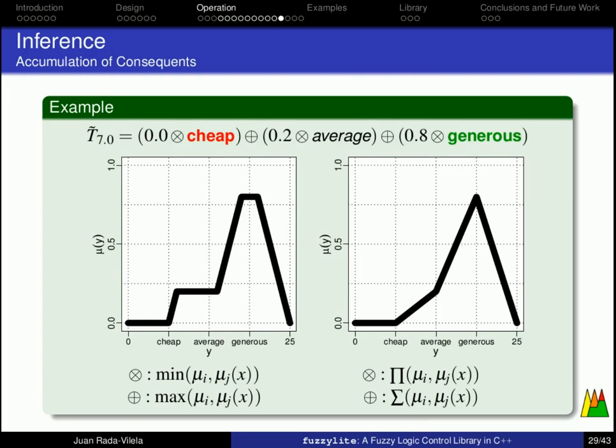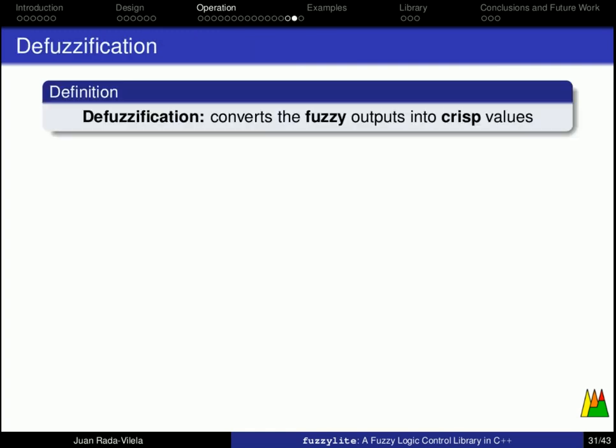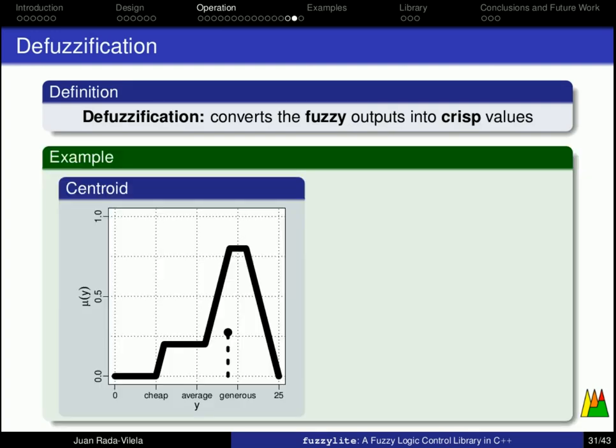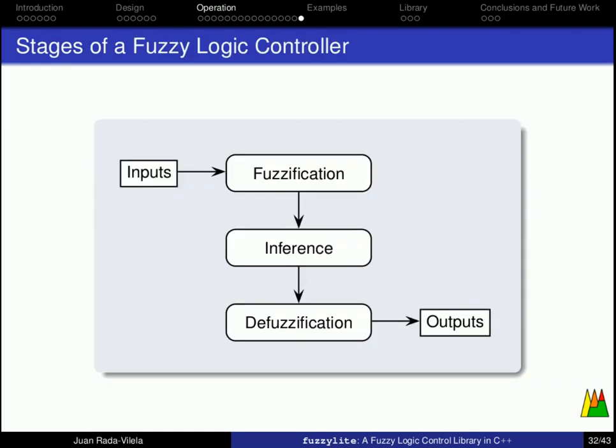This is the end of the inference stage, and now the question is, what do we do with these shapes, which are actually fuzzy numbers? How do we make sense out of them? The answer to that lies in the defuzzification stage. The defuzzification stage converts fuzzy outputs into crisp values, and a typical example is a centroid, which integrates over the fuzzy number, computes the centroid, and returns the x coordinate of the centroid. Other examples are the maxima defuzzifier, which can return the smallest, the mean, or the largest x value from the maximum membership function. And after the defuzzification, we have the output values of our fuzzy logic controller.